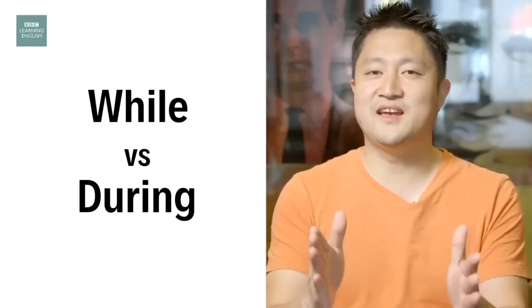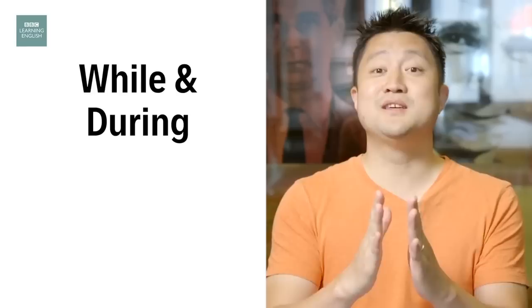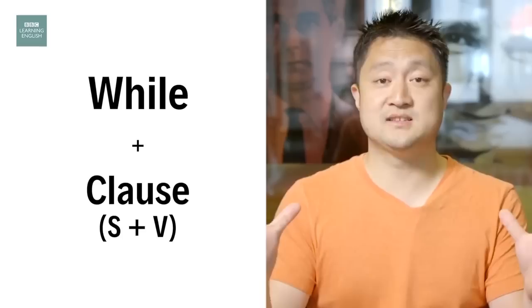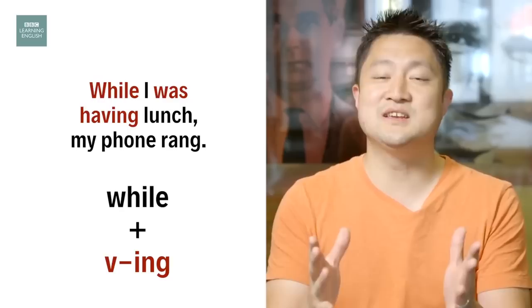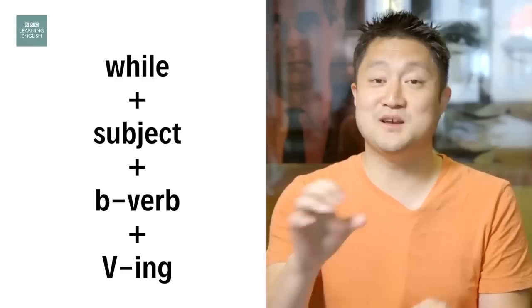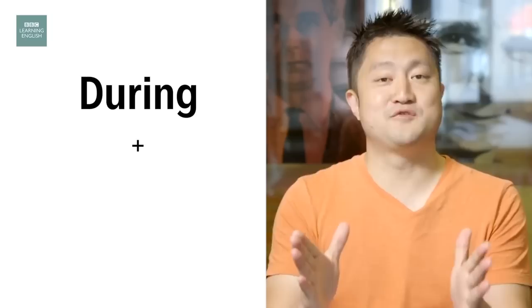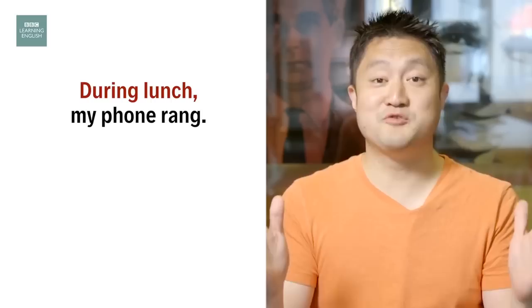Hi, this is Keith from BBC Learning English. Today I'm going to tell you the differences between 'while' and 'during'. We can use both to say that a shorter event happened within a longer event — they mean the same, but the grammar is different. After 'while', we have a clause — a group of words containing a subject and a verb. So we can say: while I was having lunch, my phone rang. The verb in the 'while' clause is usually in an -ing form. We can also use while with just an -ing form: while having lunch, my phone rang — removing the subject and the be-verb. However, 'during' can only be used with a noun phrase: during lunch, my phone rang. We cannot use a clause or just the -ing form. Same meaning, but different grammar.